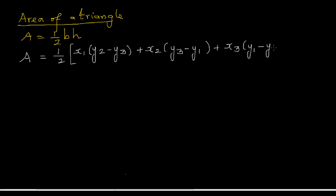You may wonder what this is all about — these are coordinates. If you look at the indices 1, 2, and 3, you can see it's an order: one-two, two-three, three-one. It's a cyclic order of 1, 2, and 3. So it's very simple to remember: x1 is the x-coordinate of the first point, times y2 minus y3, and so on.